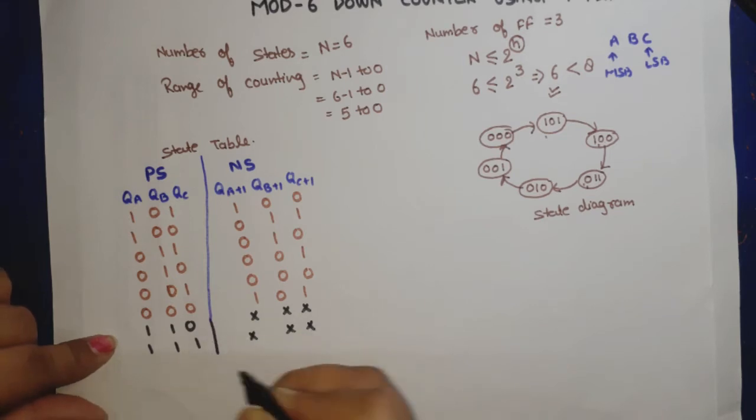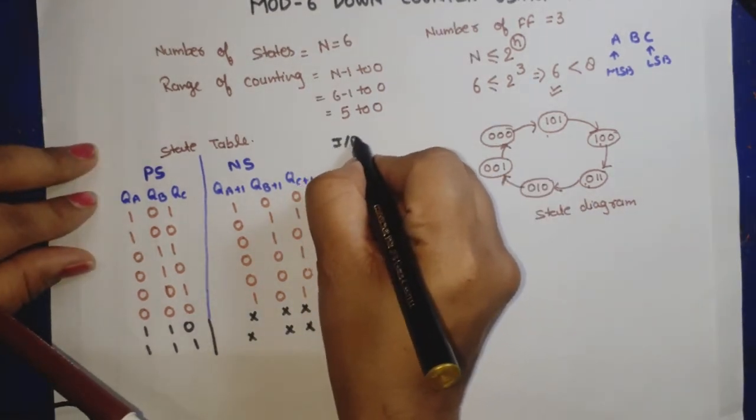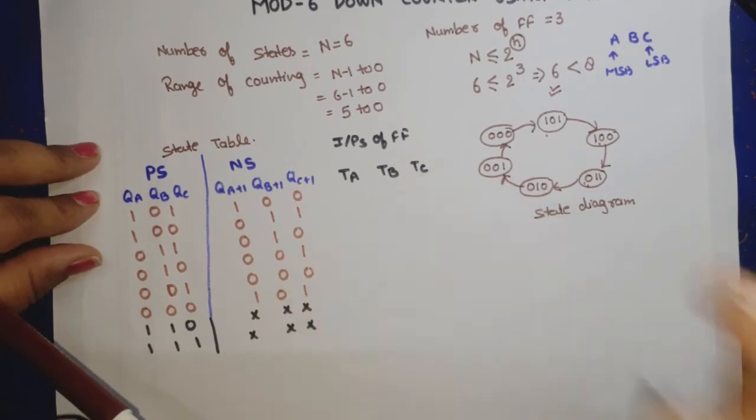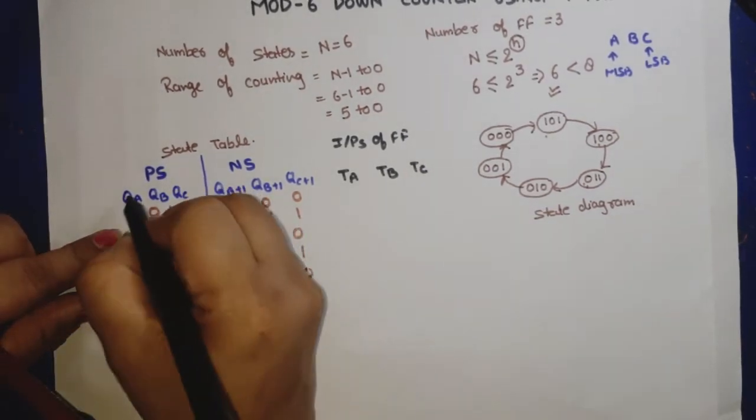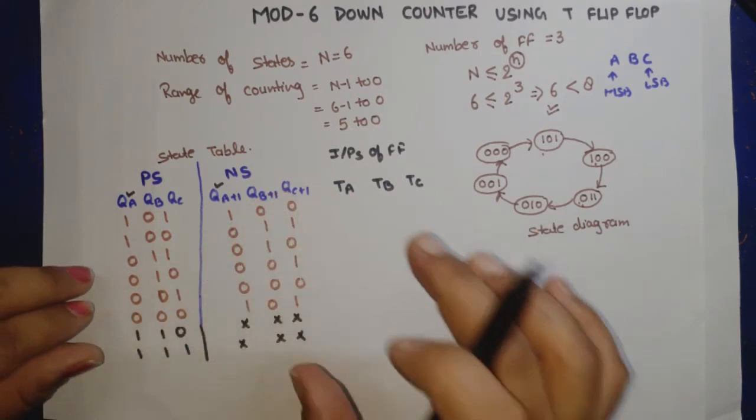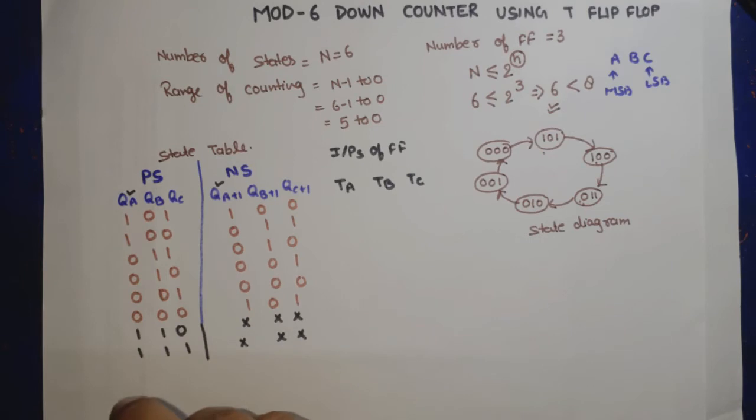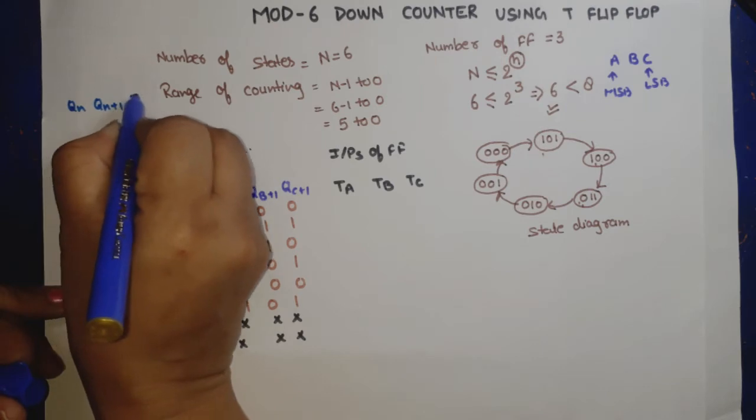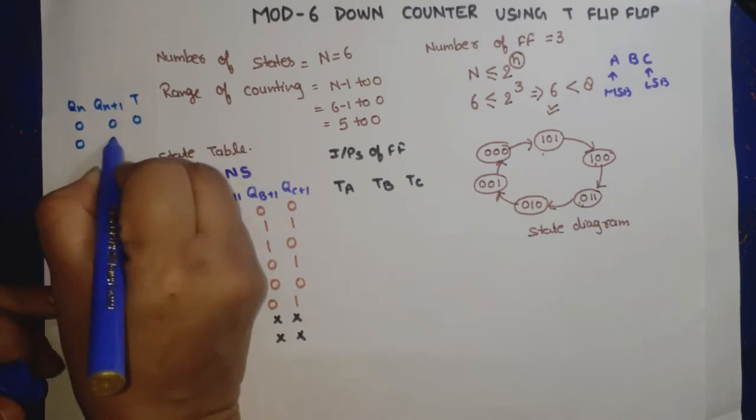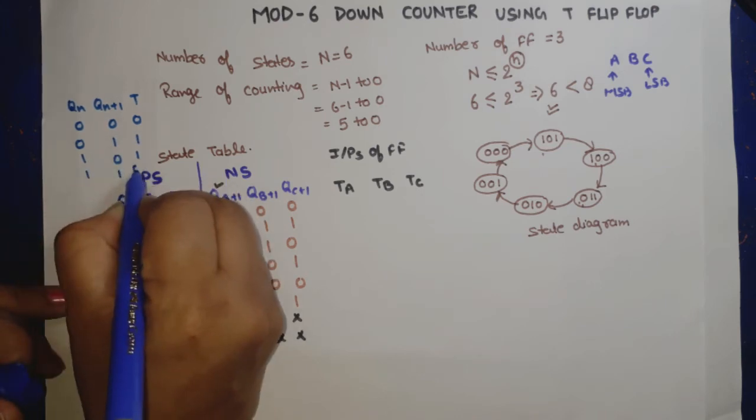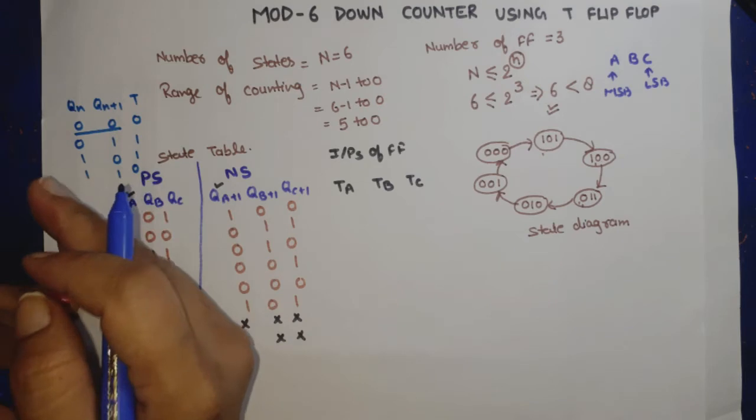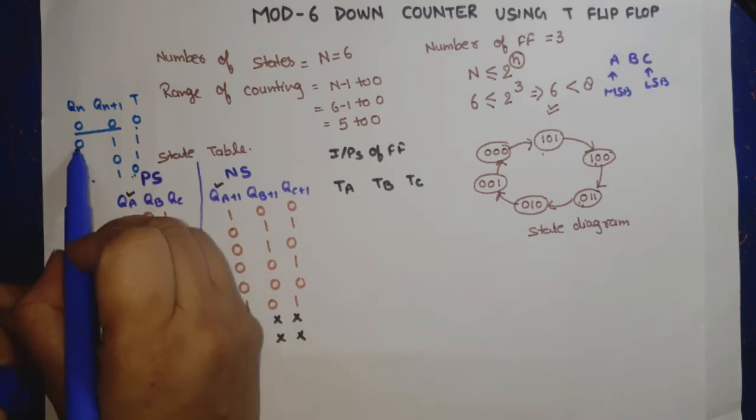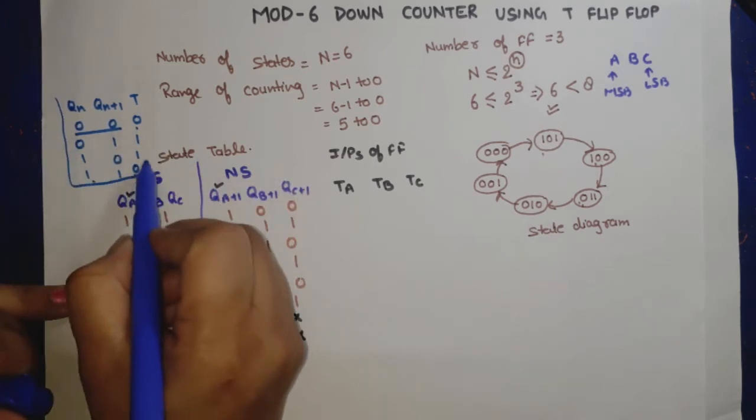Now let's write the inputs of flip-flops. For T flip-flop: when QN and QN+1 are both 0, T will be 0. When 0 and 1, T is 1. When 1 and 0, T is 1. When 1 and 1, T is 0. If present state and next state are both same, T value is 0. If different, T value is 1.